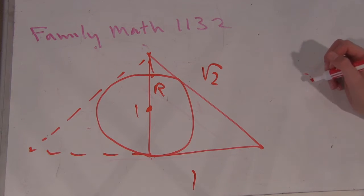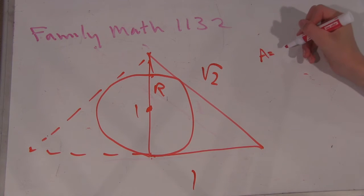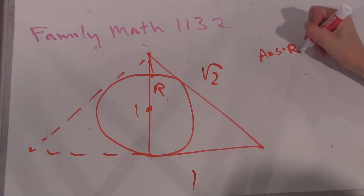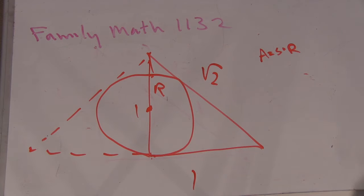Well, there's a formula for the area of a triangle that says the area A equals the semi-perimeter of the triangle s times R, I guess it would be big R in this case, where s is the semi-perimeter and r is the radius of the inscribed circle.